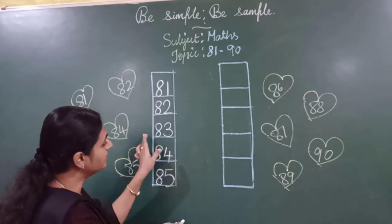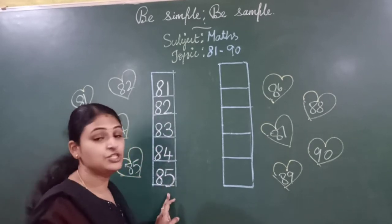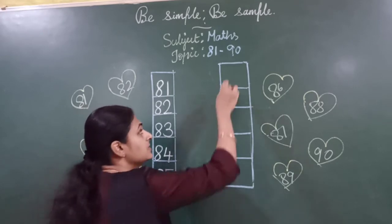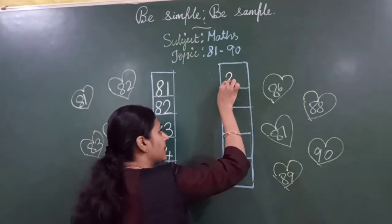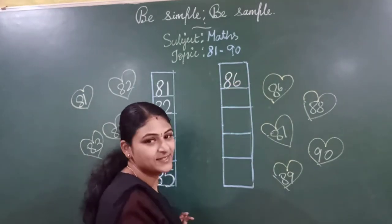81, 82, 83, 84, 85. After 5, the next number will become 6, so 86. 86.